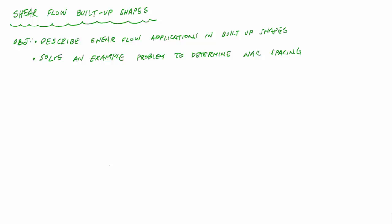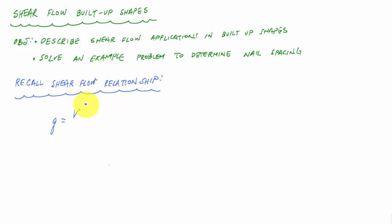Welcome back to Structure Free Learning. In this video we're going to talk about shear flow again for built-up shapes and do an example problem to determine nail spacing of a wooden cross section. Before we do that, let's talk about the shear flow formula. The formula is q = VQ/I, where V is the internal shear from the shear diagram of a beam structure.